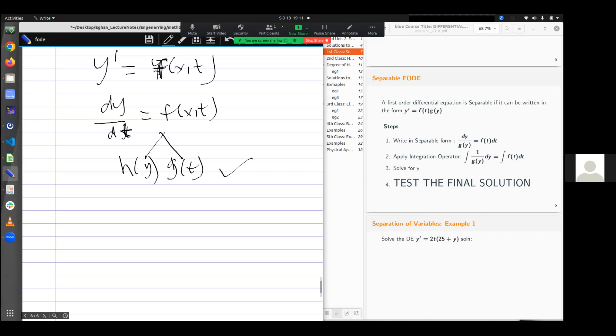So assuming it's separable, the steps are: write your separable form. Secondly, integrate what you have. And then lastly, solve for your unknown. These are just the three things.